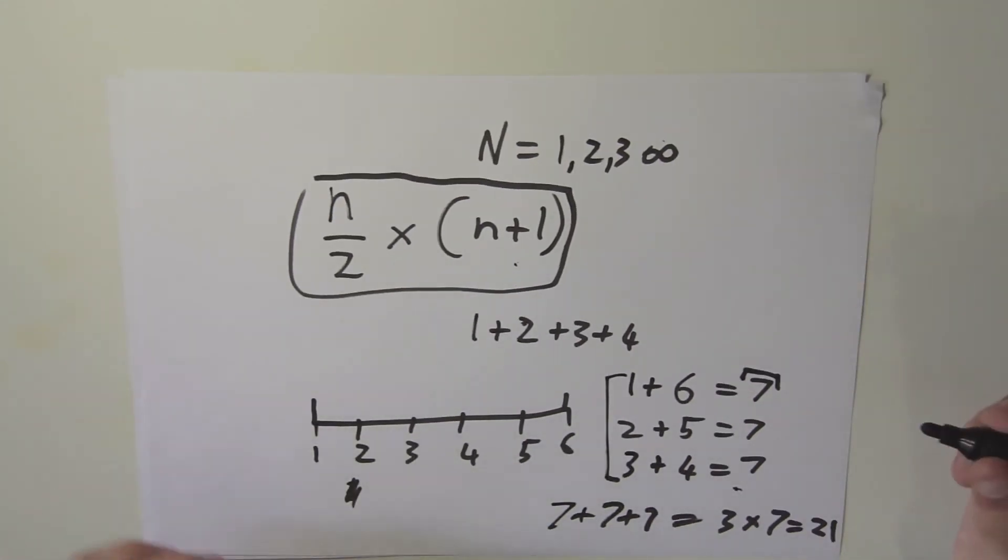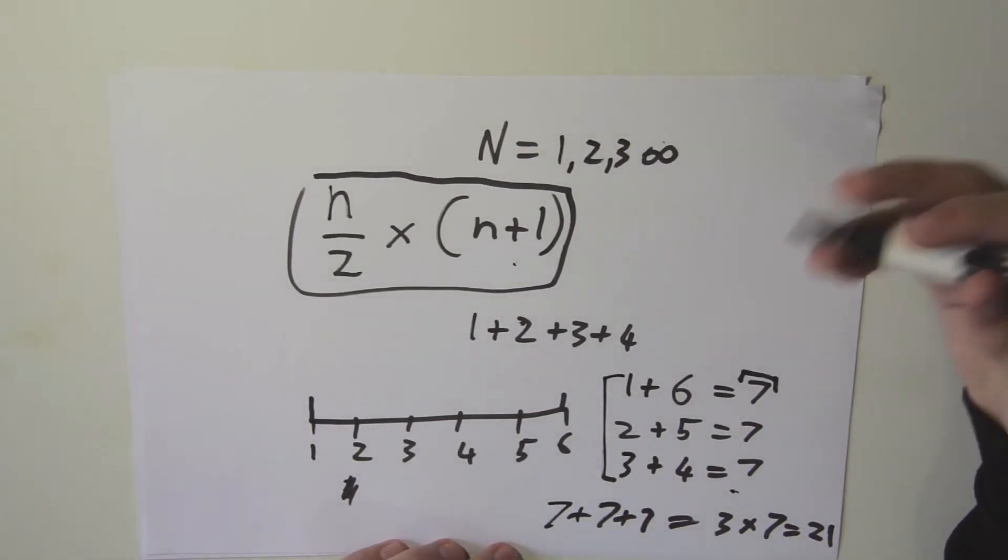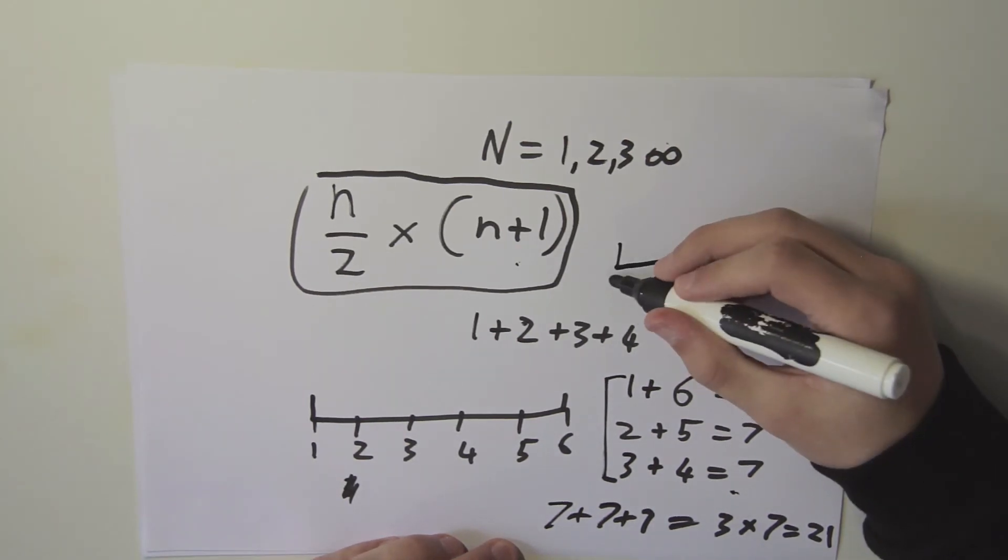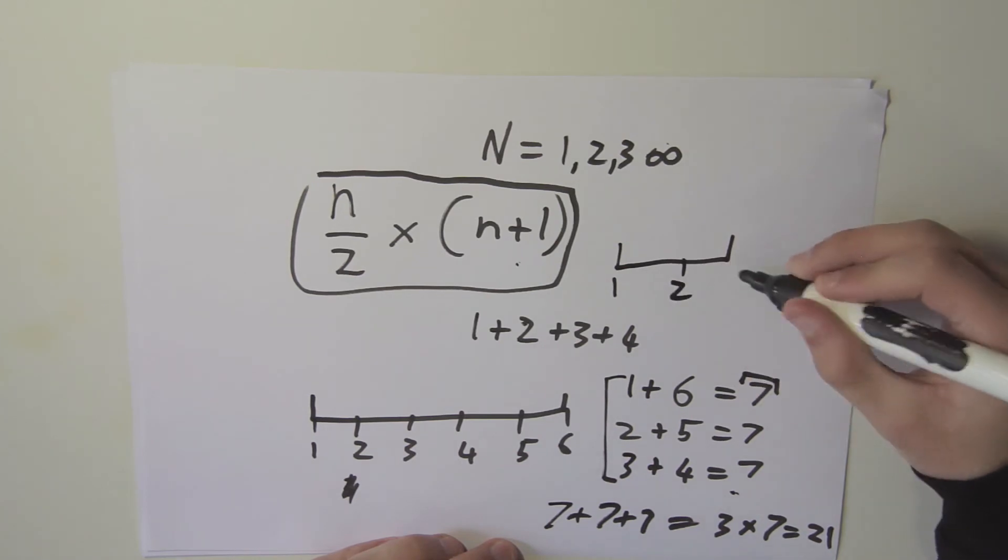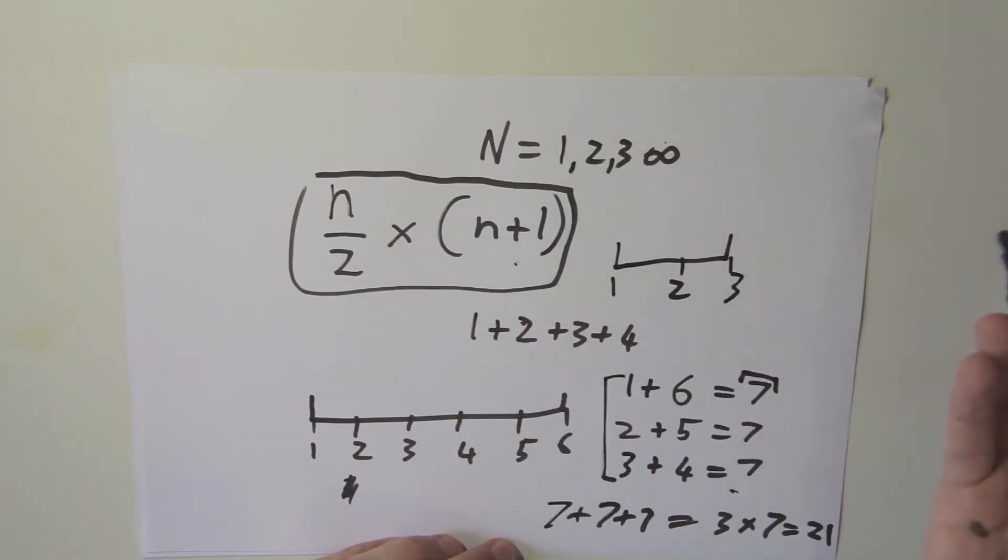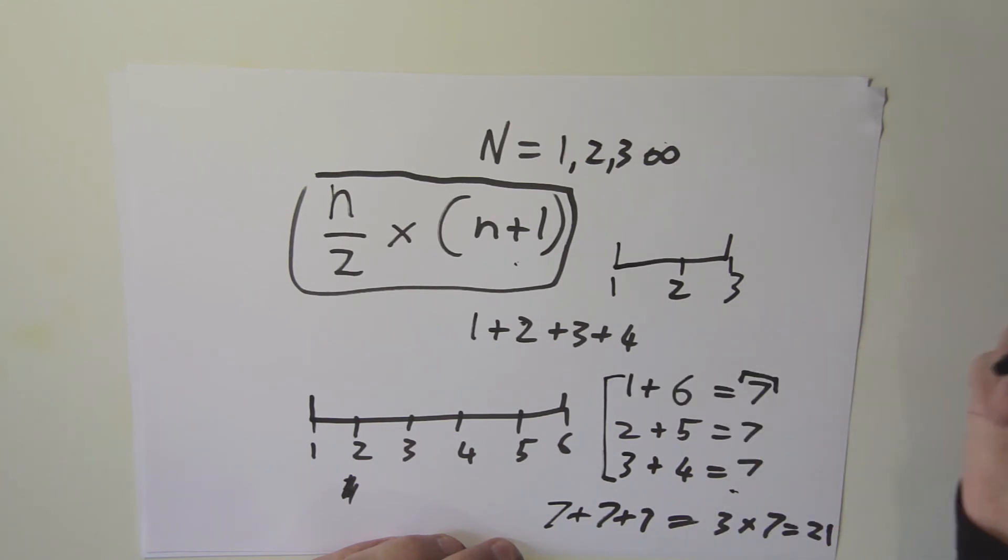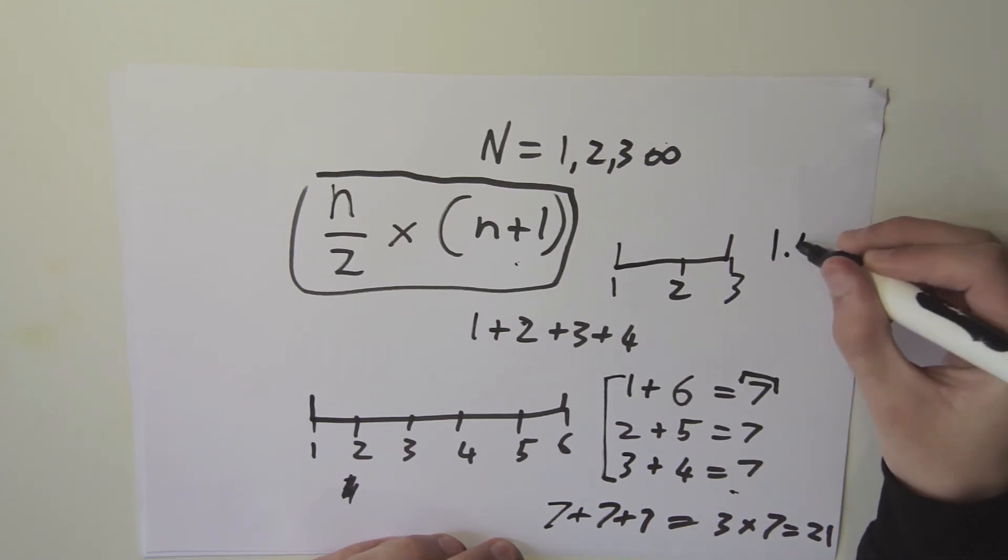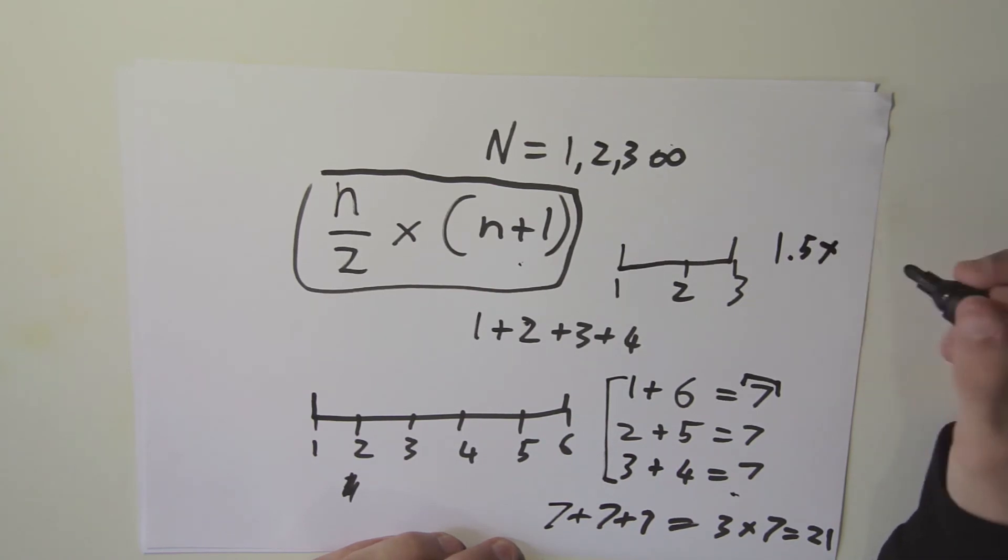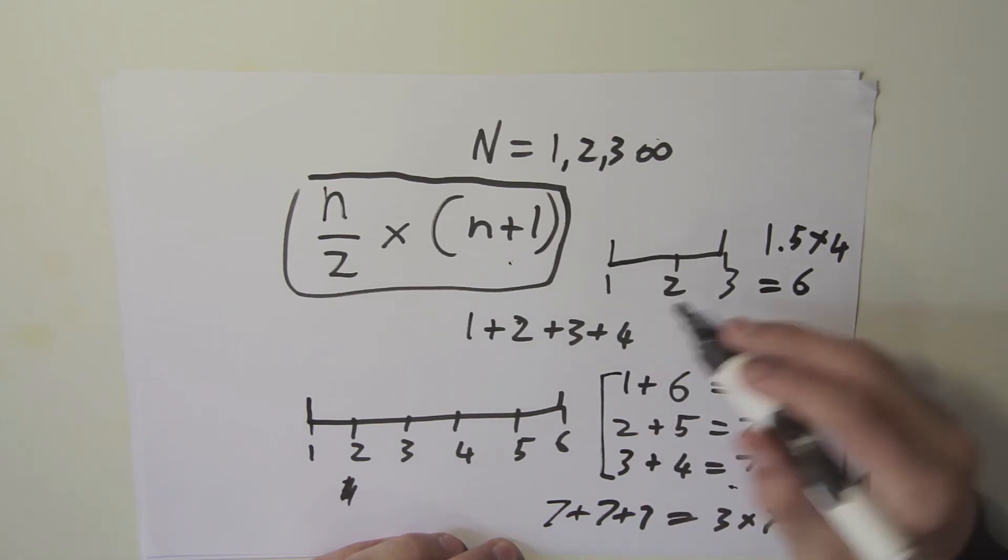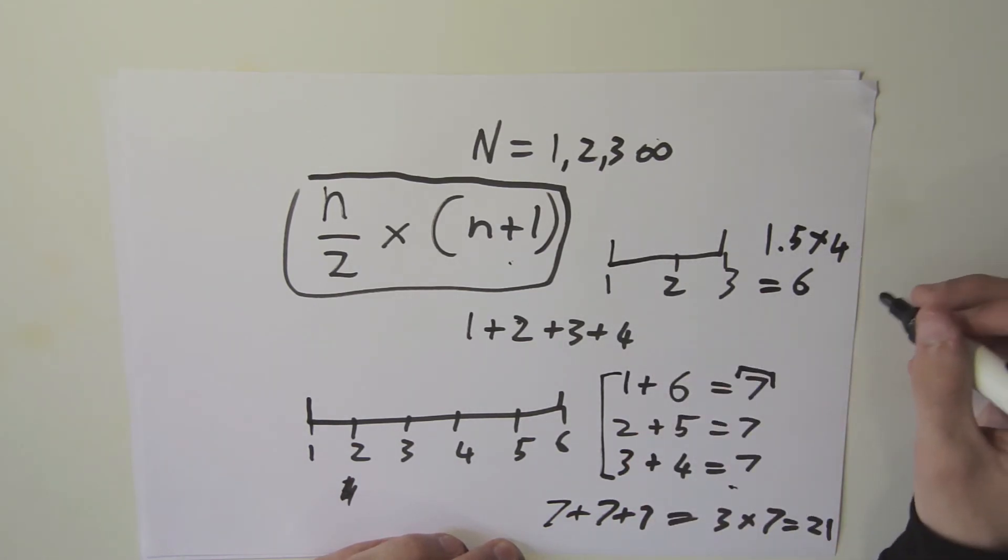What about odd numbers? Odd numbers might sound like it's not going to work, right? But it actually does. Let's just use 3 because 3 will be quick for this. So 1, 2, 3. Now, let's just use the formula in this case. What is n divided by 2? 3 divided by 2 is 1.5. So 1.5 multiplied by 3 plus 1, 4 equals 6. And as you can see, 1 plus 2 equals 3 plus 3 equals 6. So this checks out.